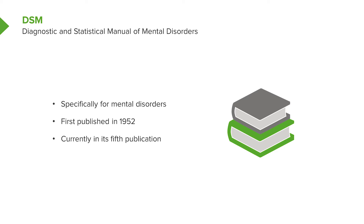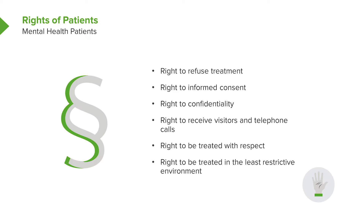Now we will review the DSM. The DSM stands for Diagnostic and Statistical Manual of Mental Disorders. Its first publication was in 1952, and we're currently on the fifth edition. This manual is specifically for mental health disorders.